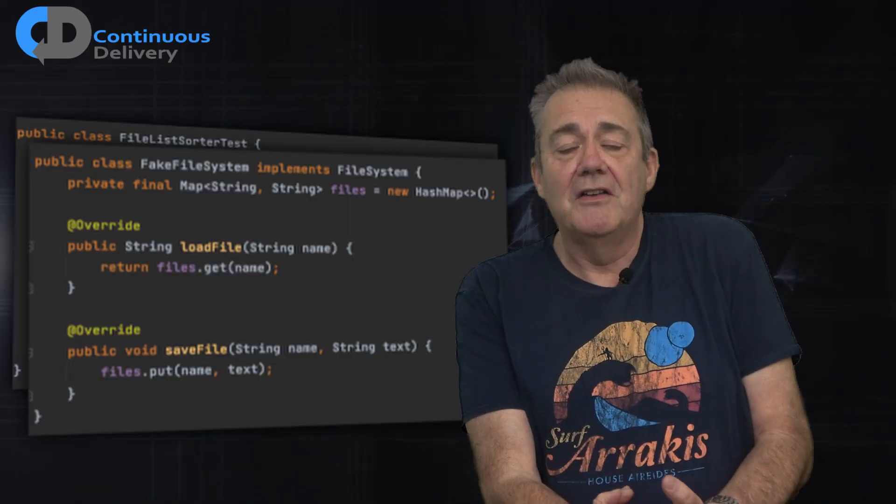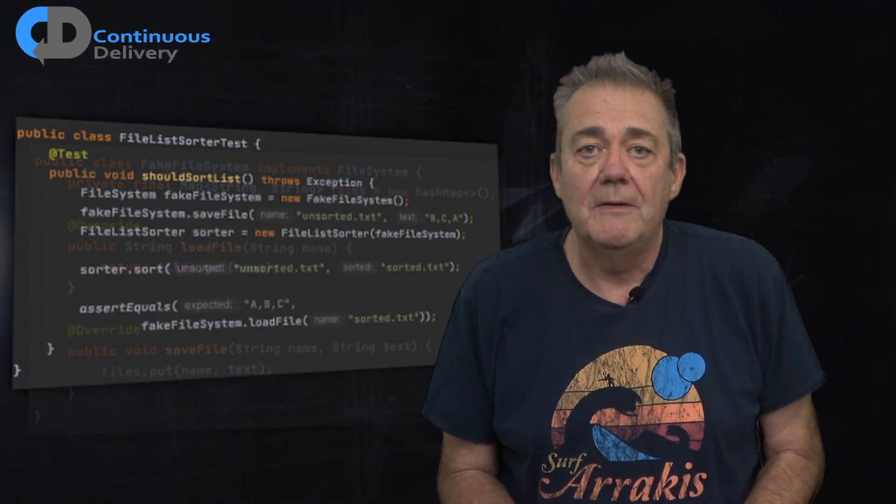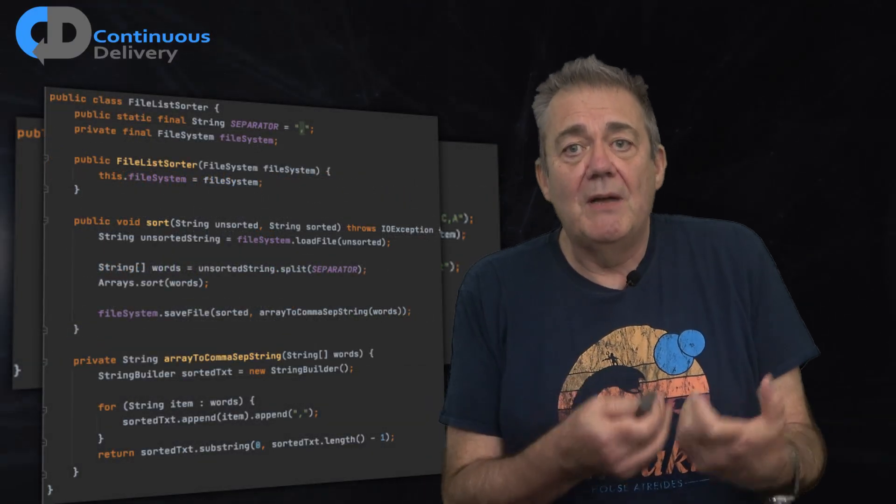It replaces the real file access with a simple hash map. Instead of writing to a file system, I'm just going to store it in memory. Here's my code. It uses my simple abstraction.